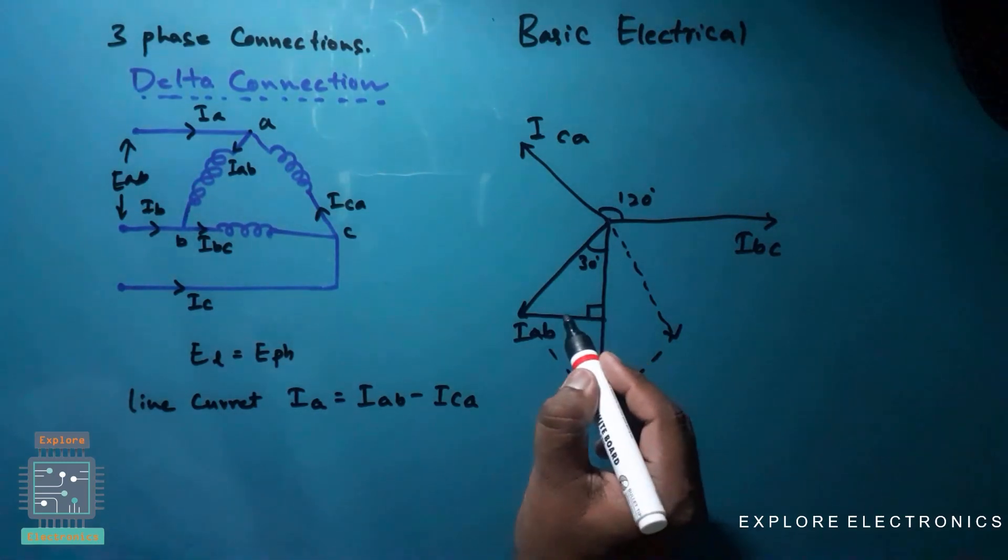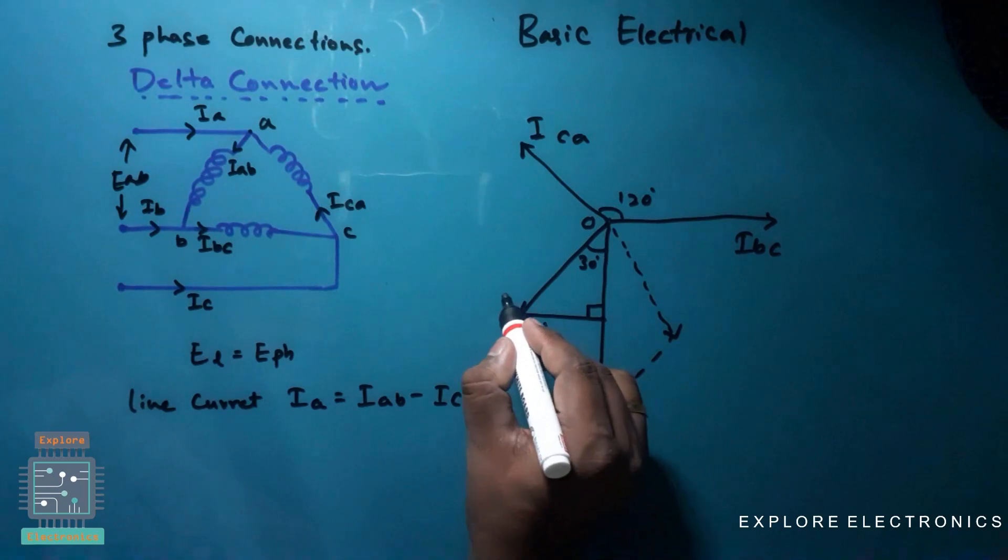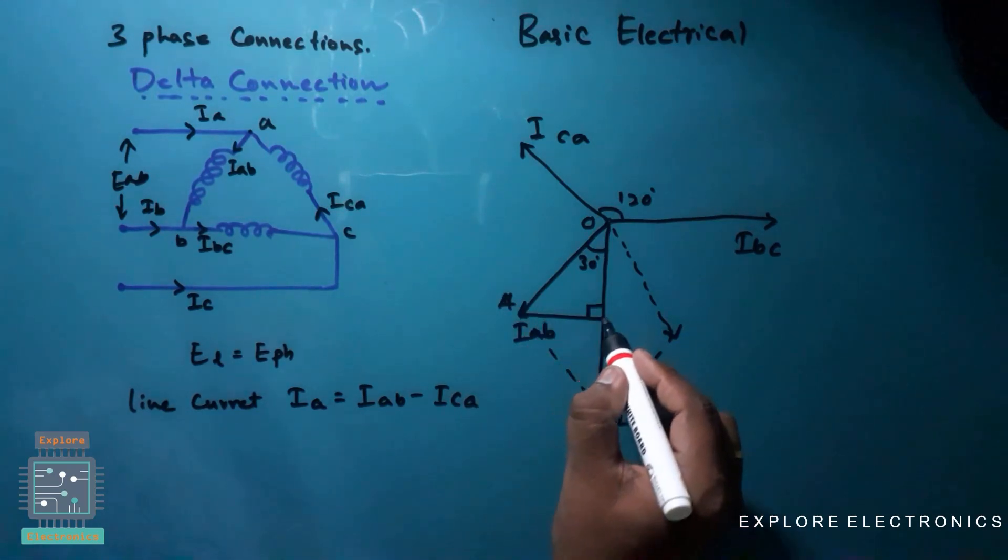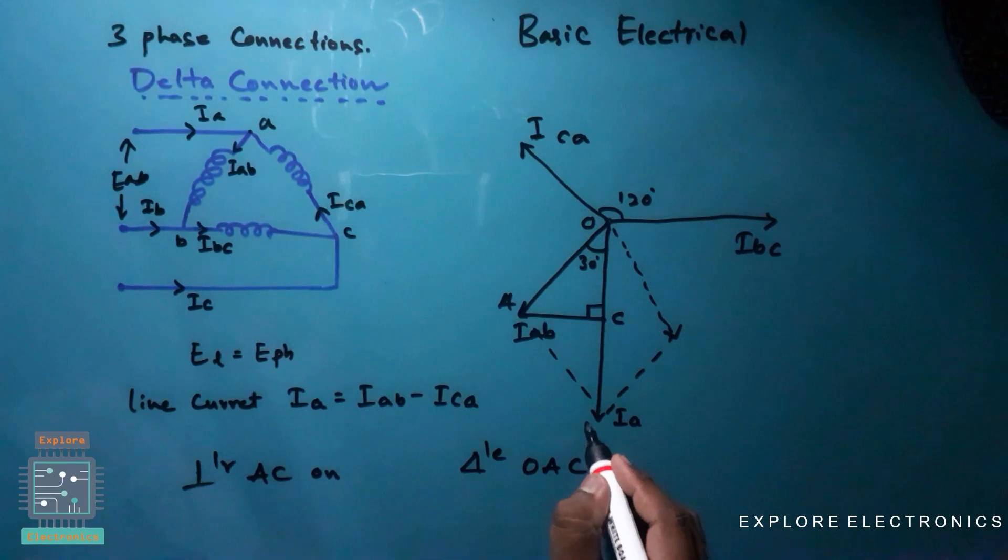So now the right angle triangle is that, suppose if I call this as point O, this as A, and this as C, triangle we are going to form that as OAC. Right here, AC is the perpendicular. You can write it as drawn perpendicular AC on, let me call this as B point, on OB.